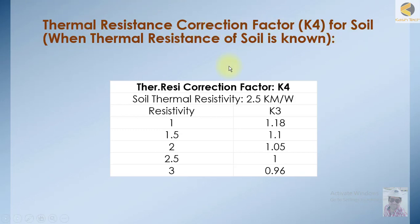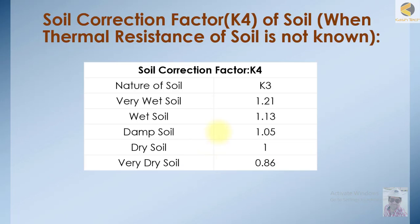Then we have the thermal resistivity correction factor K4 for soil, when the thermal resistivity of soil is known. Thermal resistivity means how much the soil can conduct temperature. If it is good at conducting temperature, its thermal resistivity is good, so the derating factor will be less, and vice versa.